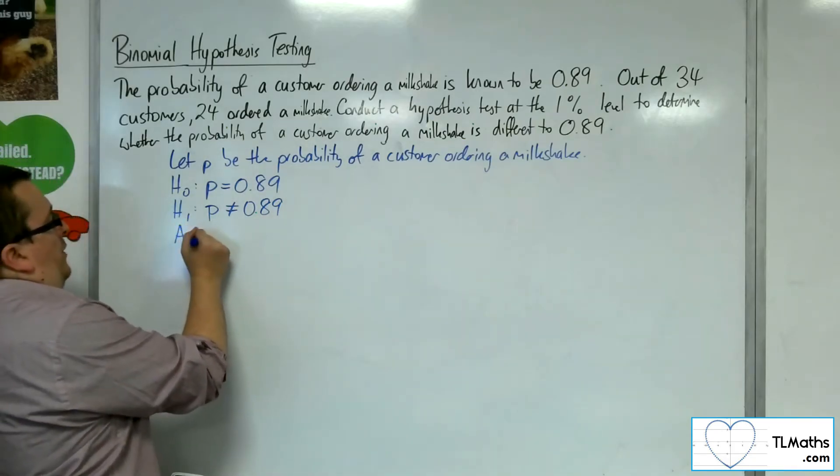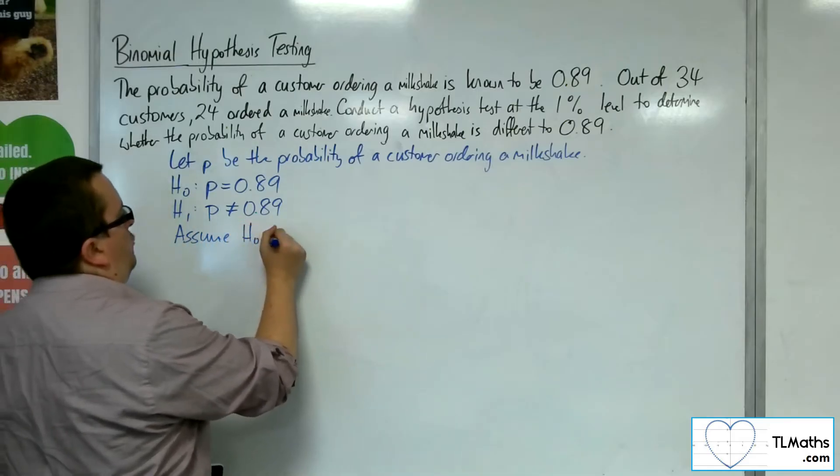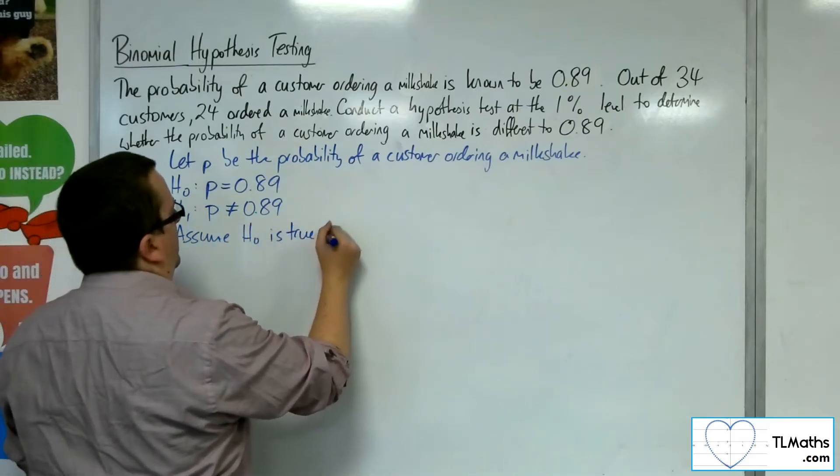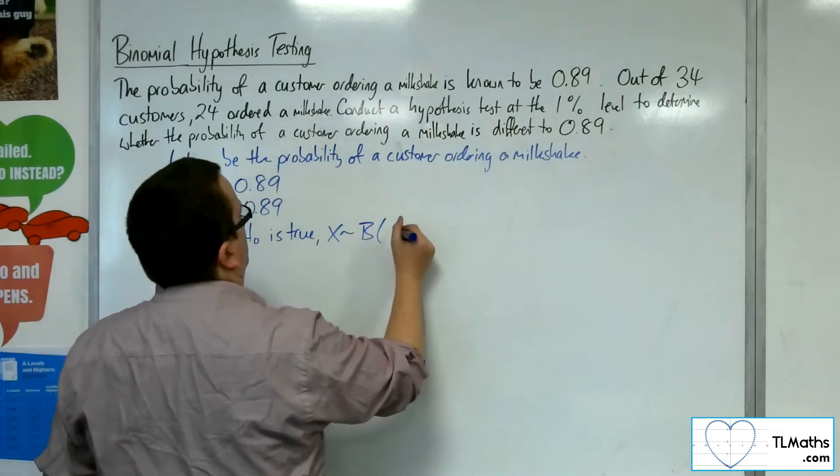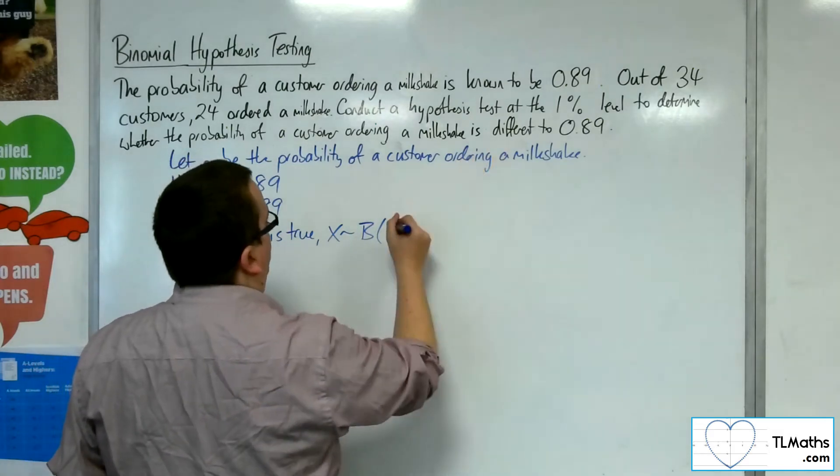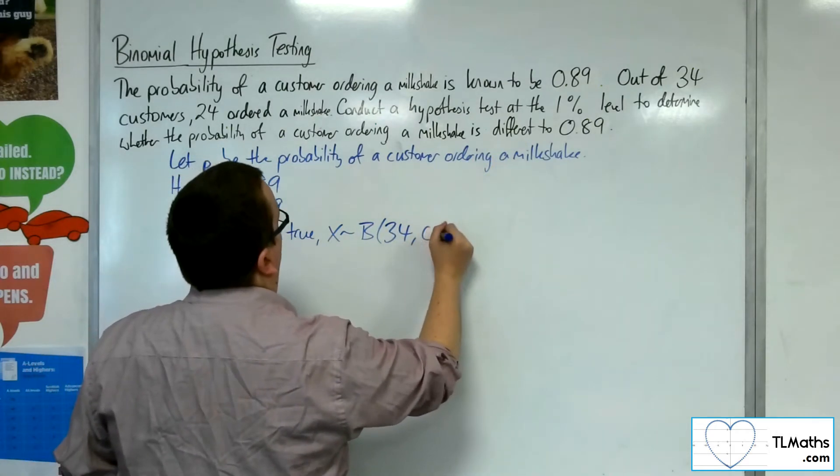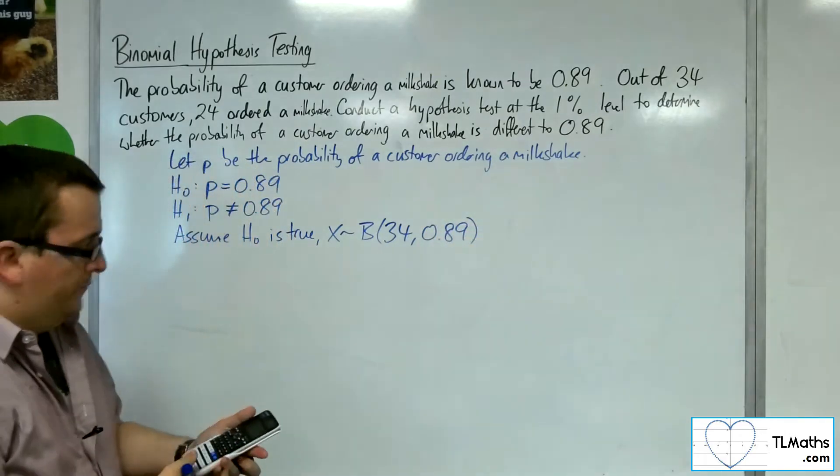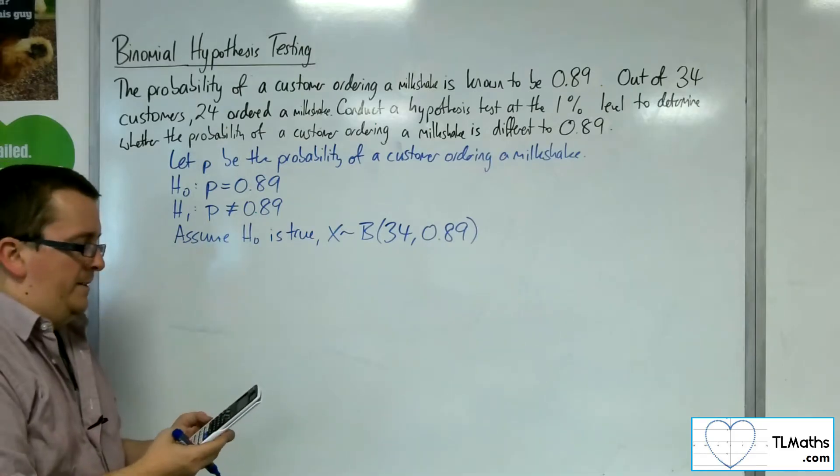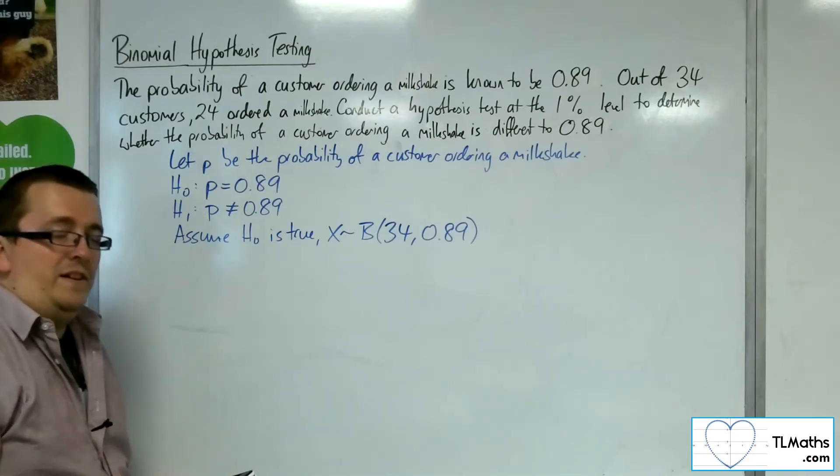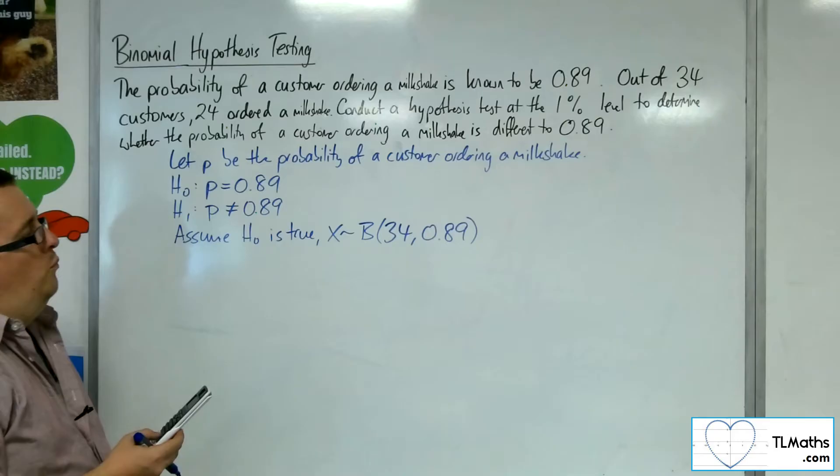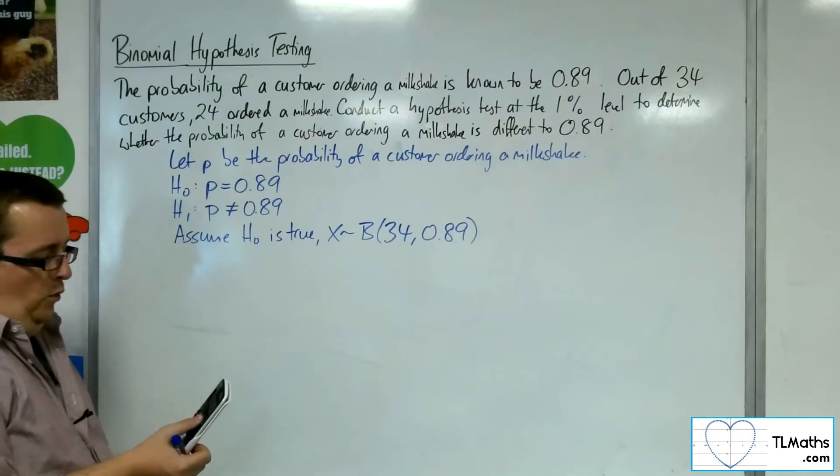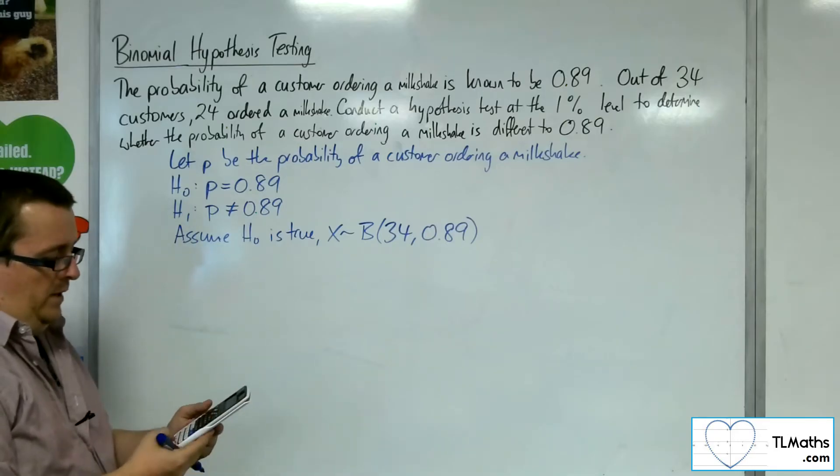Assume H0 is true. Set up a binomial distribution where N is 34 and the probability is 0.89. So 34 times 0.89 is approximately 30. So we shouldn't need to write all of these values into our table.